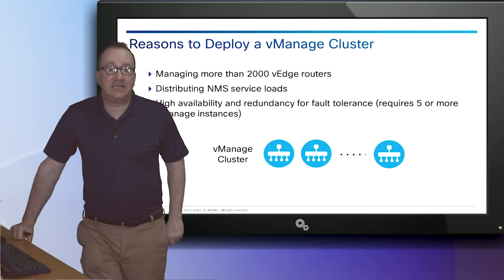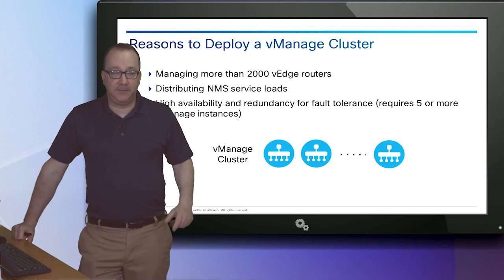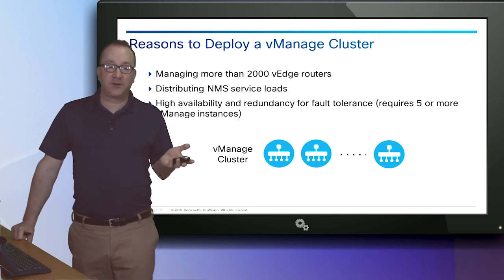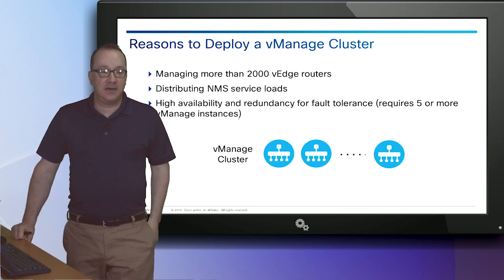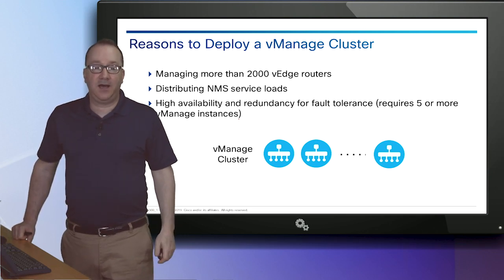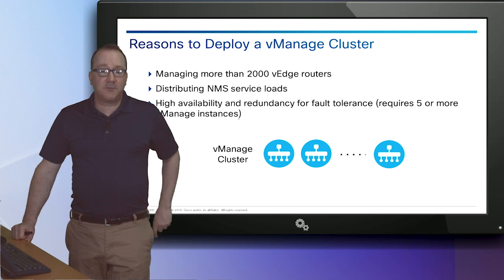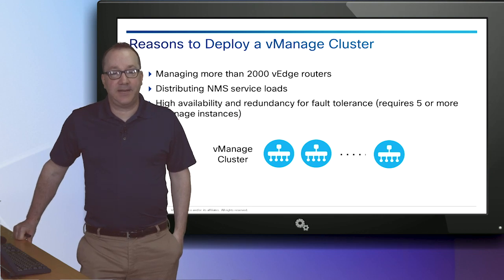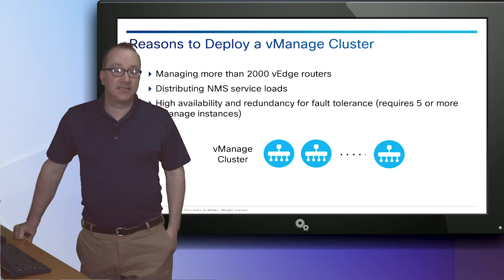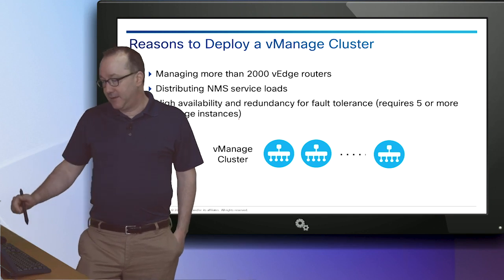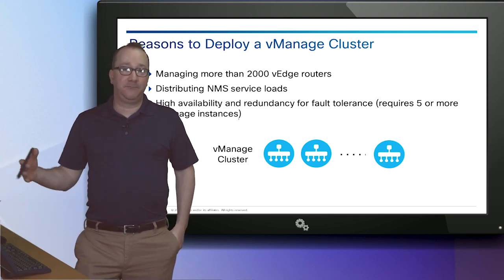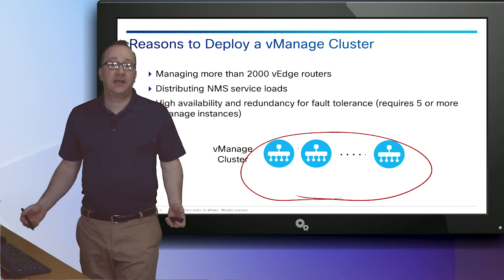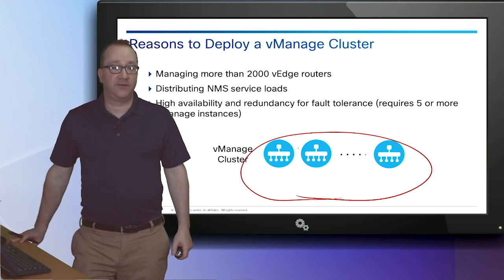The vManage cluster consists of at least three vManage devices, which provides scalability. Each vManage supports approximately 2,000 devices, so a cluster of three can support up to about 6,000. They automatically load balance devices between the devices they manage. For HA, at least five vManage devices are required — an odd number — so that if a vManage fails, the remaining devices continue to operate with a majority quorum. These devices vote, and with an even number we could have a tie, so we need an odd number of devices.